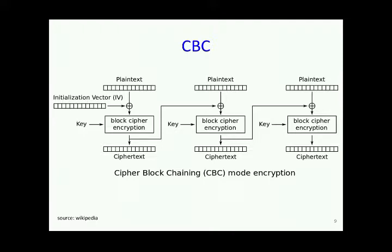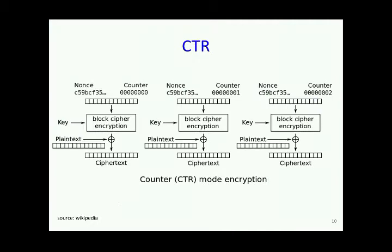With CBC, whenever you encrypt a block you XOR it with the previous encrypted value, so even if block one and block two have the same content, their encryptions will be different. We also introduce the notion of IV — initialization vector — a random value to ensure that even if you encrypt the same message with the same key multiple times, you get a different ciphertext each time. CTR uses the same notion but calls it a counter and nonce: a counter per block and a nonce acting as the IV.